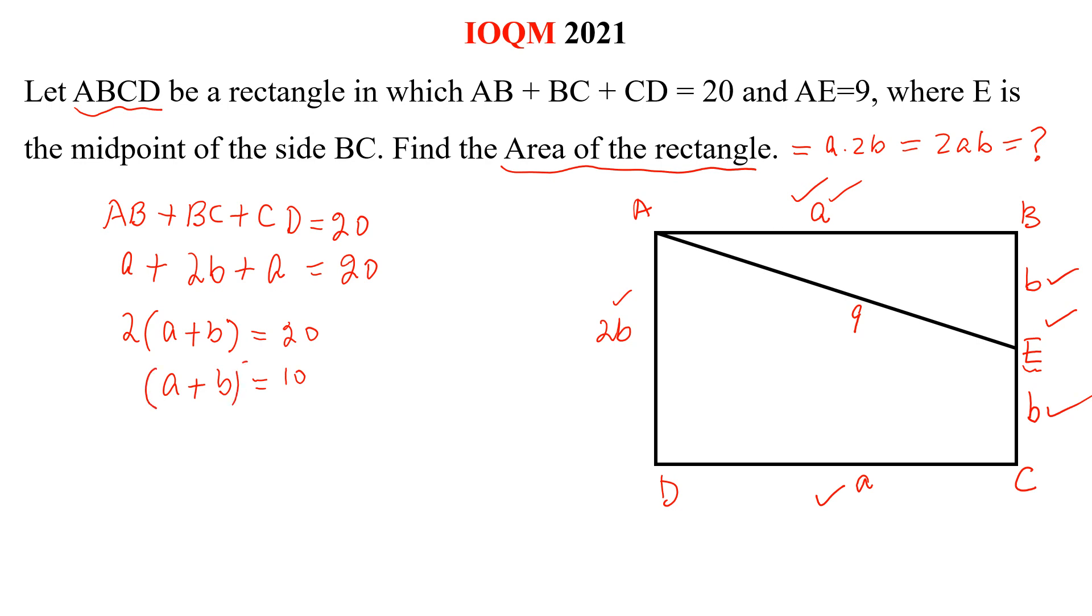Again, taking whole square both sides. This is equal to A square plus B square plus 2AB is equal to 100.